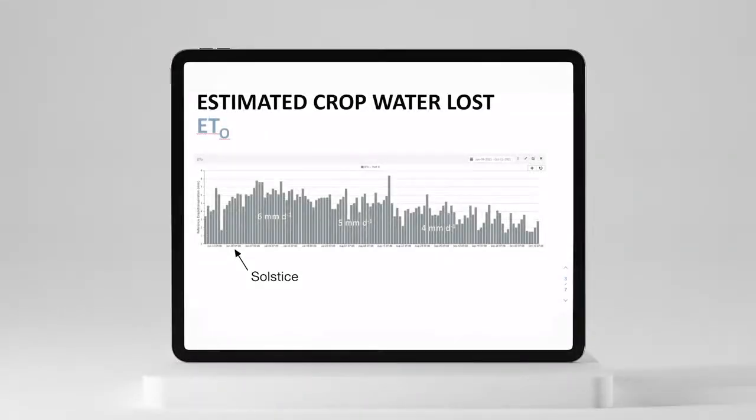So this is an ET zero, meaning a reference ET. But since I was working in grass, that was actually the estimated water loss from this grass crop. And what I noticed was that the shape of this curve kind of went up and then went down, and it kind of matched right here, the solstice, the summer solstice.